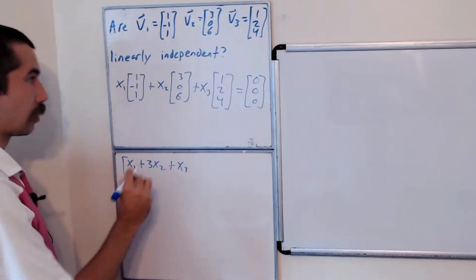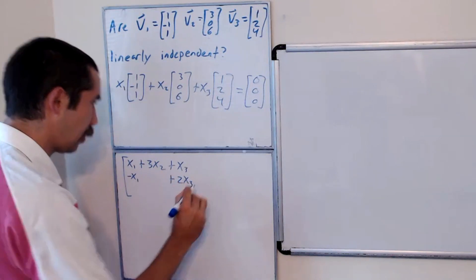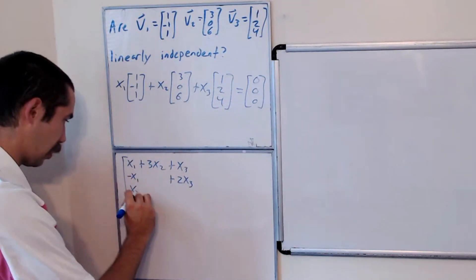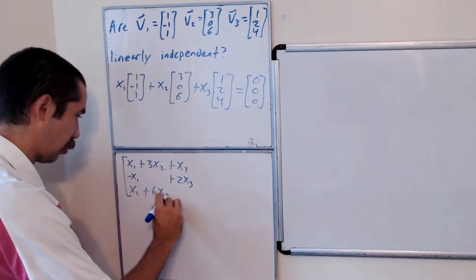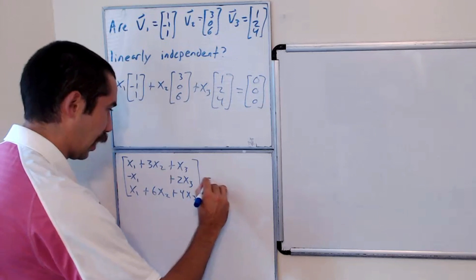x1 plus 2x3 in the second term, and x1 plus 6x2 plus 4x3 in the third term. And again,